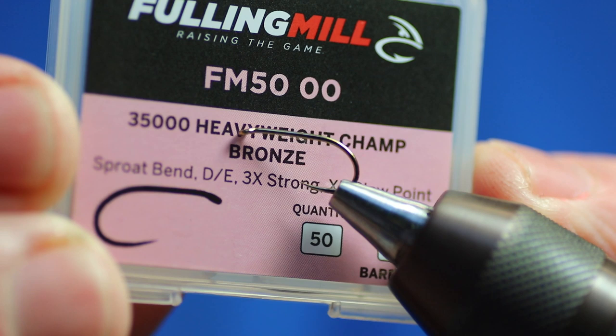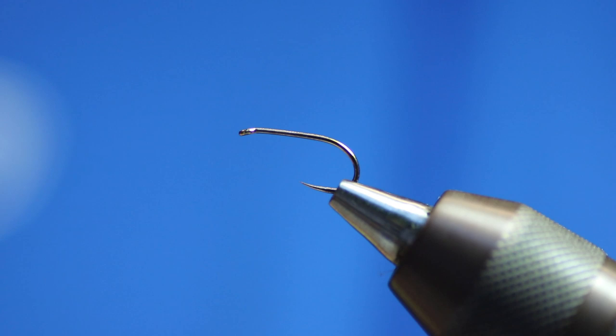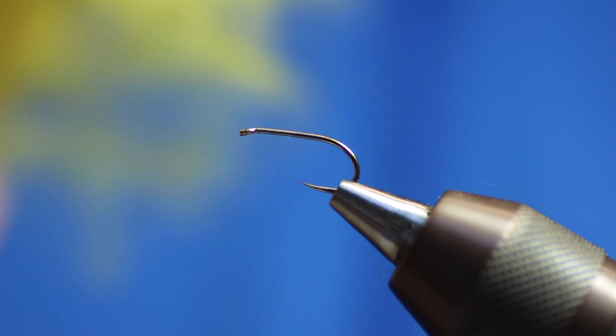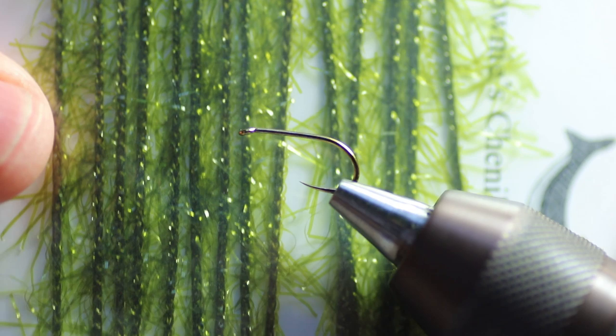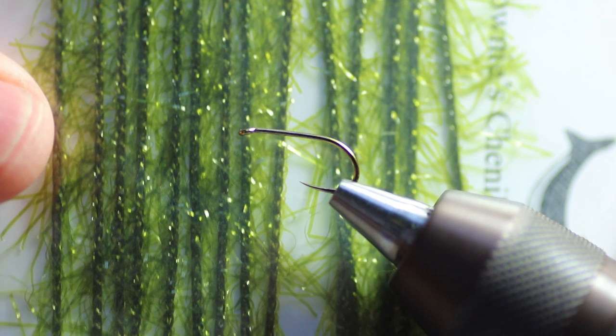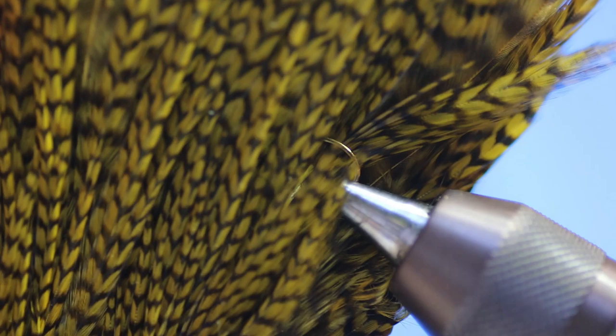I tend to use the same sort of hooks all the time, it's a good strong hook. Then we're going to need some unithread fire orange. What we're going to use is some damsel olive marabou for the tail. We're using some olive straggle for the body, and then we're going to use a nice dyed olive hackle.